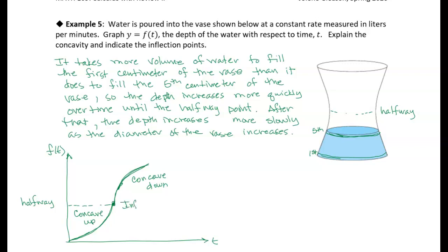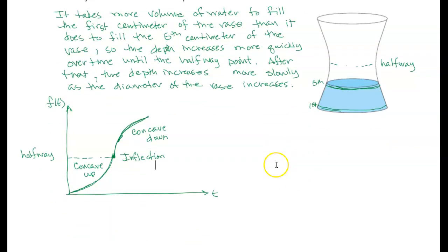The inflection point is right at the halfway point, where the rate of increase goes from increasing to decreasing. The function itself isn't decreasing — it's that the rate at which it's increasing is decreasing. The second derivative is the rate of the rate: you have the function, you have the rate, and you have the rate of the rate.